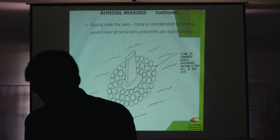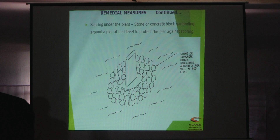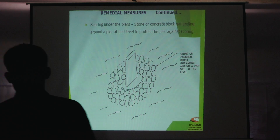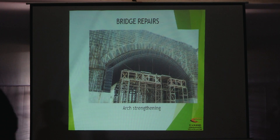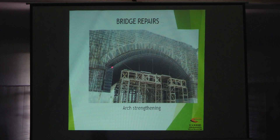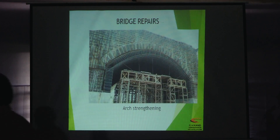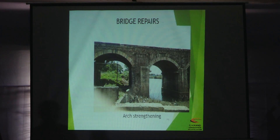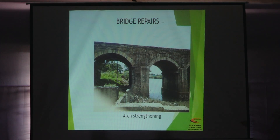For avoiding scour conditions, we need to put a scour measure by providing these gabion blocks. For supporting this arch, we have provided a new reinforced arch below the existing arch. This is strengthening of the arch. This is a typical example of strengthening of an arch — a masonry arch supported with a concrete arch.